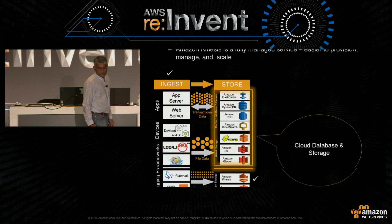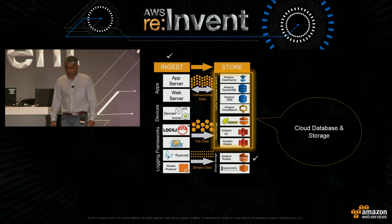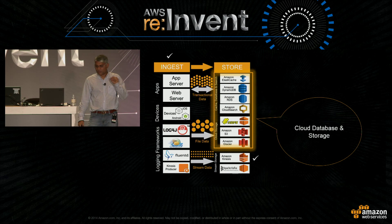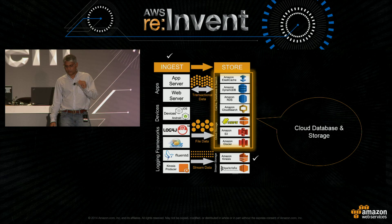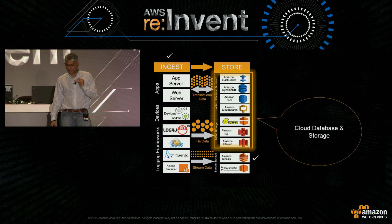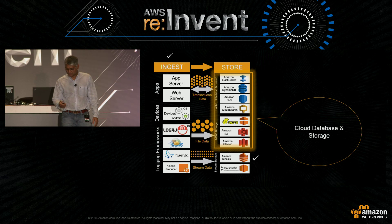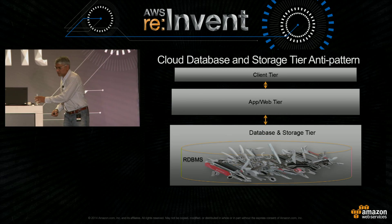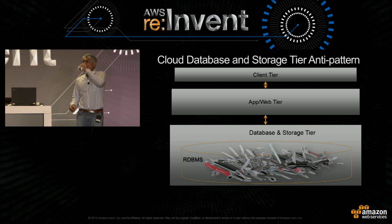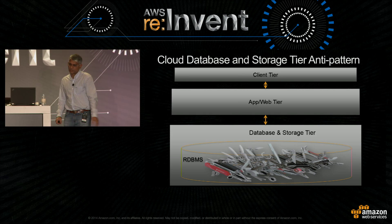Moving along to the next stage — let's go into databases and storage. At the ingest stage we looked at three types of data: transactional data, file data, and streaming data. We looked at stream storage technologies — Kinesis and Kafka. Now let's go into how to deal with databases and storage.